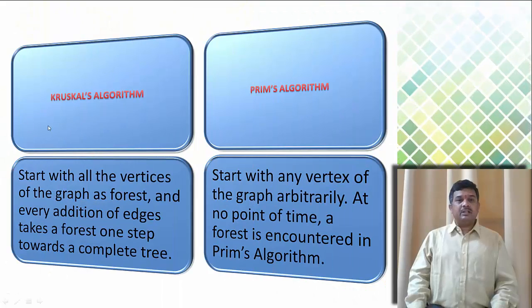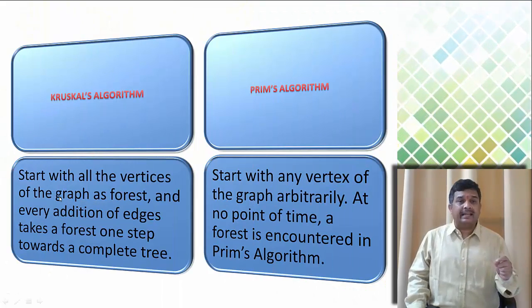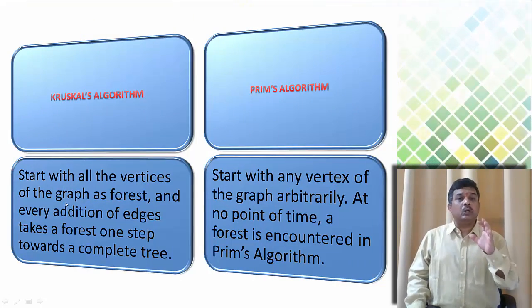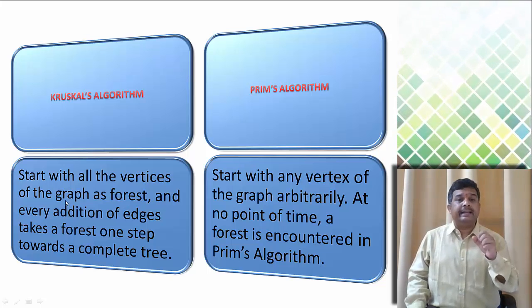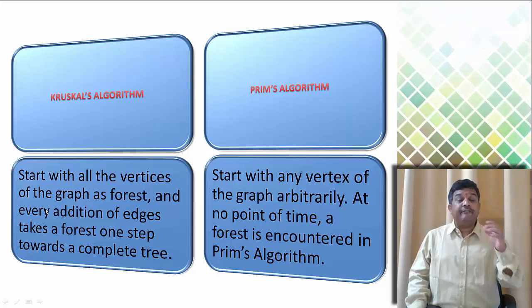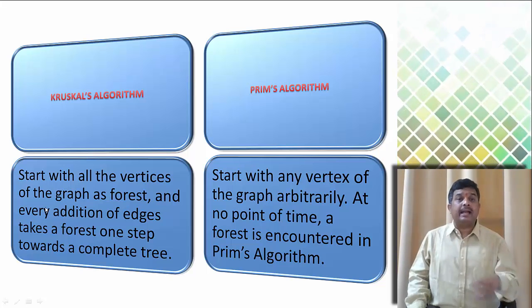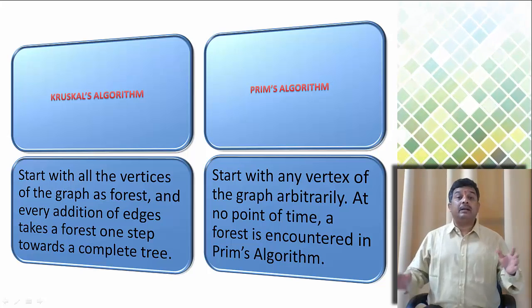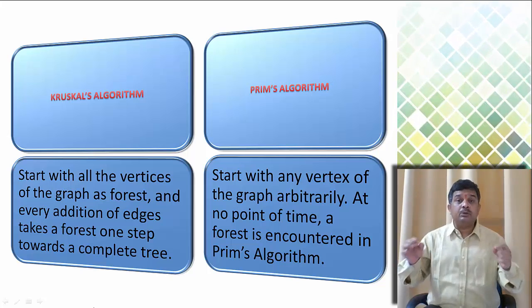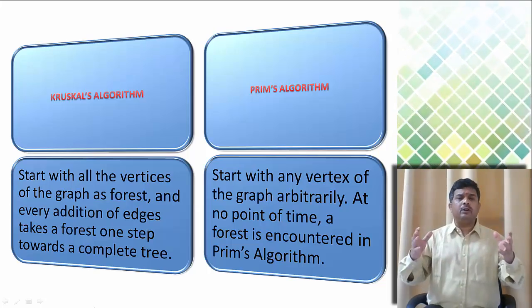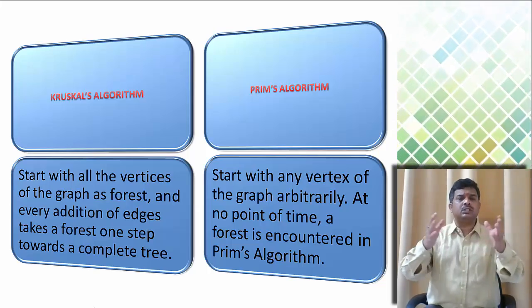The first difference is that under Kruskal Algorithm we start with all the vertices and the graph is taken as a forest. Every edge that we add leads to the completion of the tree. But under Prim's Algorithm we start at an arbitrary vertex and there is no concept of a forest here.